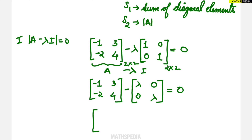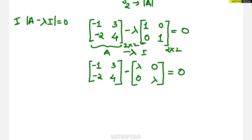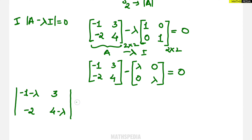When we subtract corresponding elements: minus 1 minus lambda, then 3 minus 0 is 3, minus 2 minus 0 is minus 2, and 4 minus lambda is 4 minus lambda. Now I find the determinant of this matrix and equate it to zero.